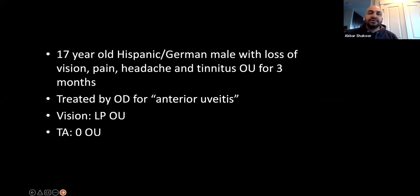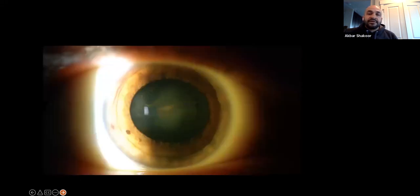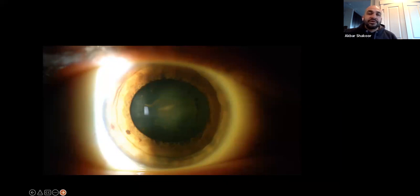Here's a 17-year-old Hispanic/German male with loss of vision, pain, headache, and tinnitus for several months. He was treated by an optometrist for anterior uveitis. His vision was light perception in both eyes and his pressure was zero. On anterior segment examination, you can see a fibrin membrane on the surface of the lens since he was on Durezol every hour for so-called anterior uveitis — his anterior segment was quiet and his KPs were gone, but he had pretty wild-looking cataracts in both eyes.